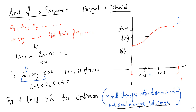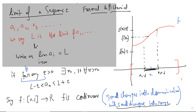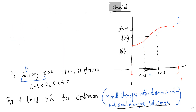Whenever the input is within delta of x-naught, all the mapped output values must lie within epsilon of f(x-naught). This must happen for every epsilon. We're not writing a formal proof here, but let's see the connection between a function being continuous and sequences converging.